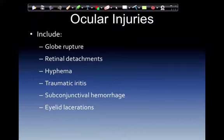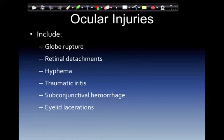Ocular injuries include globe rupture, which is loss of the eyeball's integrity, generally caused by direct force or penetrating trauma. Retinal detachment lifts from the posterior part of the globe, interrupts blood supply, and causes ischemia; it results from a tear in the retina or material buildup under the retina. Hyphema is blood accumulation in the anterior chamber of the eye between the cornea and the iris, resulting from direct trauma. Traumatic iritis occurs when the iris is contused and has difficulty contracting. Subconjunctival hemorrhage involves capillary leaks within the conjunctiva over the sclera, resulting from direct trauma or secondary to coughing and straining. Eyelid lacerations occur due to penetrating or blunt trauma with shearing forces applied to the face.